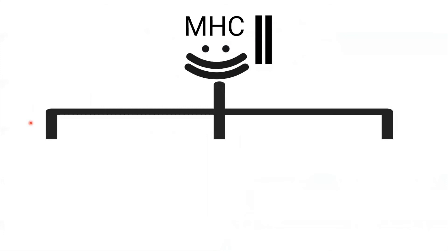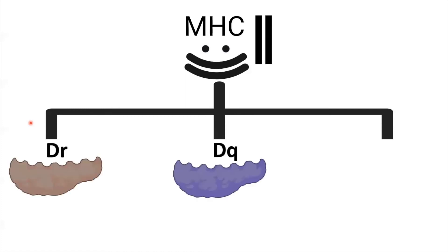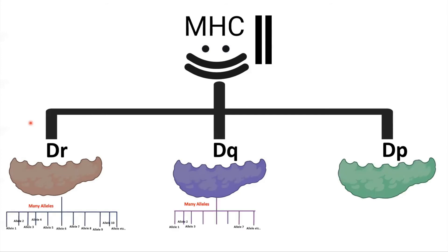Similar to MHC class 1, MHC class 2 is also divided into three types: MHC class 2DR, MHC class 2DQ, and MHC class 2DP. Each one of these types has its own alleles.